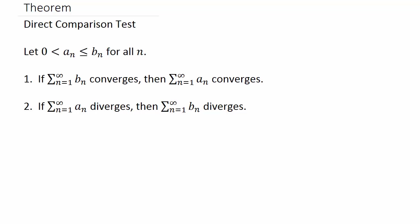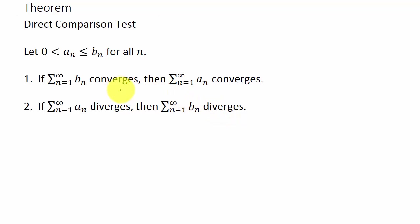We're going to take a look at the direct comparison test and determine if a series converges or diverges using this test. We're going to let a sub n be between zero and b sub n — so zero less than a sub n less than or equal to b sub n for all n. If the series b sub n converges then the series a sub n converges. If the series a sub n diverges then the series b sub n diverges. Basically, b sub n is larger than a sub n.